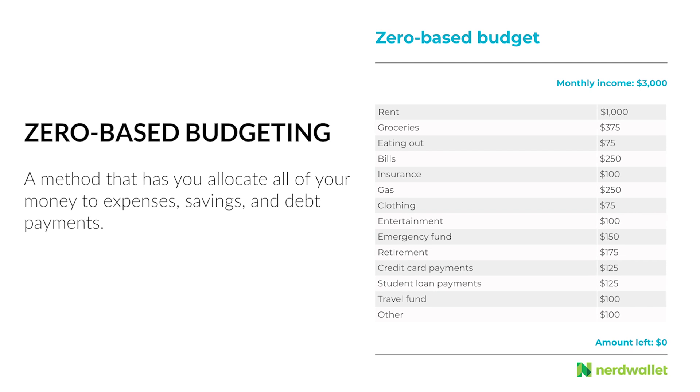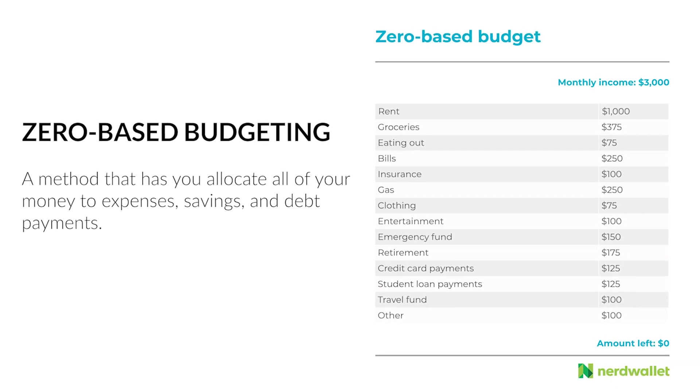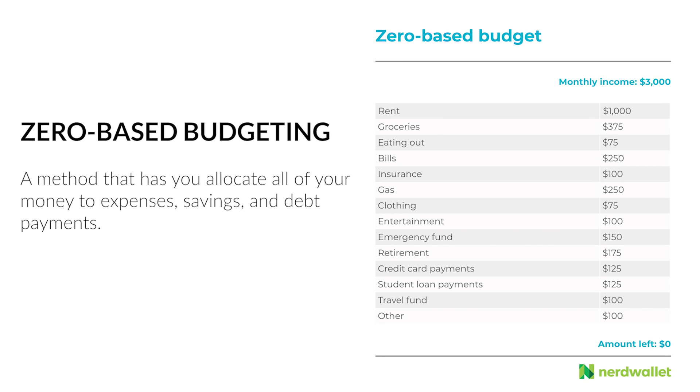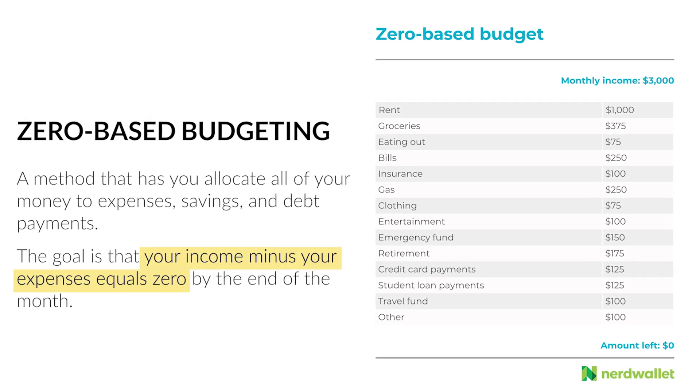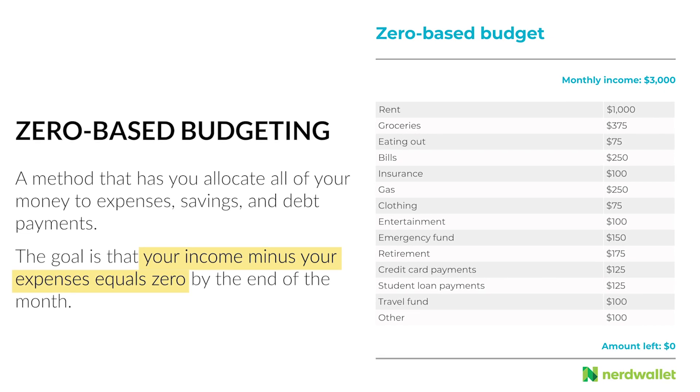Before we jump into my spreadsheet, I want to explain the kind of budget I use. I use a zero-based budget. From NerdWallet: zero-based budgeting is a method that has you allocate all of your money to expenses, savings, and debt payments. The goal is that your income minus your expenses equals zero by the end of the month.